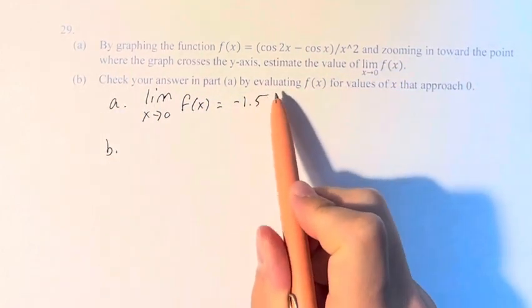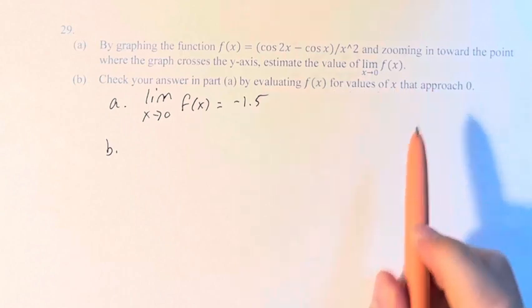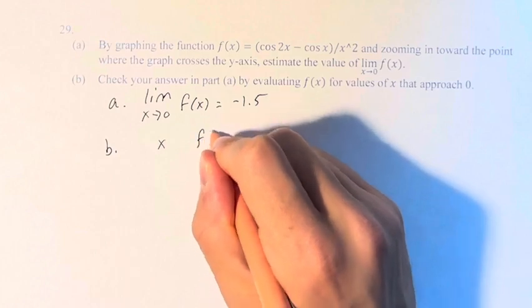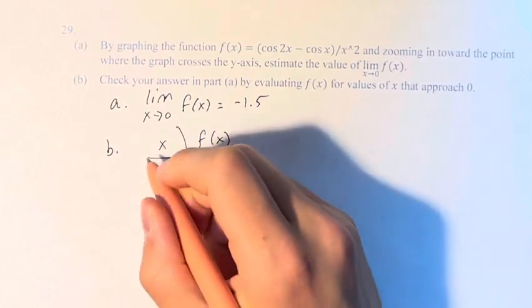B, we're asked to check our answer by evaluating f(x) for values of x that approach zero. So if we take values of x and plug them into f(x), we get the following.